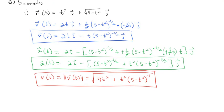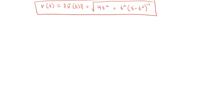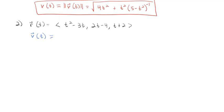Let's try one more example. Given the position vector r(t) = ⟨t² − 3t, 2t − 4, t + 2⟩ in component form, the velocity vector is its derivative: ⟨2t − 3, 2, 1⟩. The acceleration vector is the derivative of that: ⟨2, 0, 0⟩.